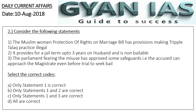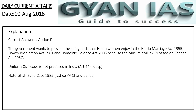The correct answer is Option D — all statements are correct. The government wants to provide Muslim women the safeguards that Hindu women enjoy under the Hindu Marriage Act 1955, Dowry Prohibition Act 1961, and Domestic Violence Act 2005. Muslim women do not enjoy these, as Muslim civil law is based on the Sharia Act of 1937. The Uniform Civil Code is mentioned in Article 44 as a directive principle but is not practiced in India. The Shah Bano case of 1985 is relevant here.